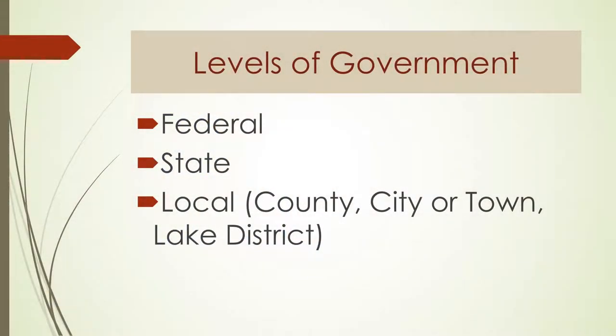Just having a basic understanding of what that sausage-making process is that leads to the laws we get at the state level, or the ordinances we get locally. We basically have three levels of government: federal government, state government, and then everything else is local and derives its authority from the state — counties, cities, towns, even lake districts. Lake districts are a quasi-governmental entity with taxing power, authorized by statute through chapter 33.